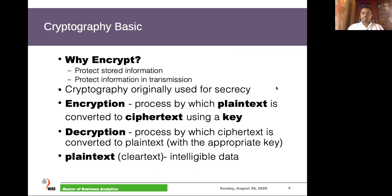The encryption process transfers plain text to cipher text; the decryption process transfers cipher text back to plain text. In these two processes we use another input called a security key. Usually we use the same security key for both the encryption and decryption process. How we are going to share this key between the two endpoints — we will discuss later.